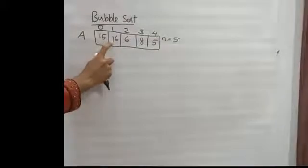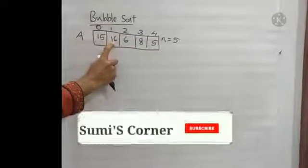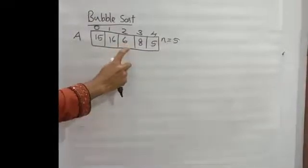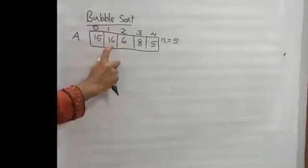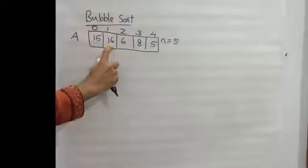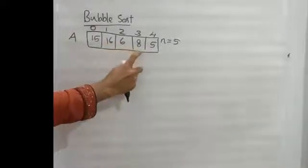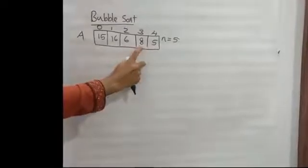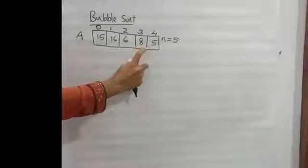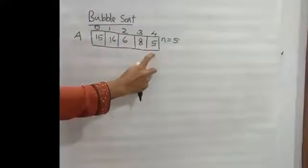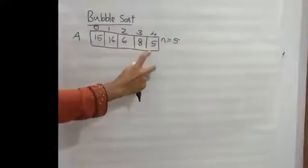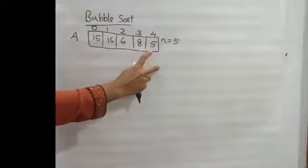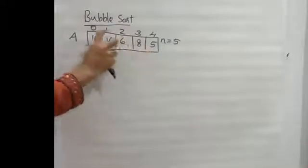Now no altered. Then the 1st index is greater. Then the 1st index is greater. Then the 3rd index is greater. We compare adjacent location elements — if the left is greater, we interchange; if not altered, we leave it. This is how bubble sort works.